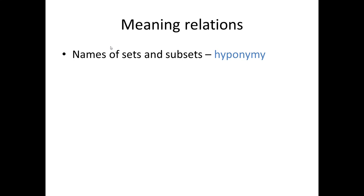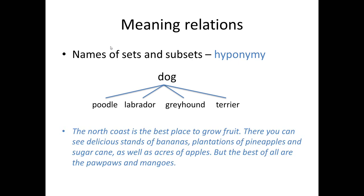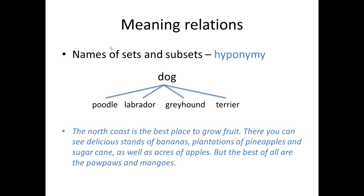Another meaning relation involves names of sets and subsets. The technical name for this is hyponymy. For example, 'poodle' names a subset of 'dog' — a poodle is a kind of dog. There's also a meaning relationship between 'poodle' and other words that name other kinds of dogs, for example labrador, greyhound or terrier. Texts can be tied together by using words which have these kinds of meaning relation, like: 'The north coast is the best place to grow fruit. There you can see delicious stands of bananas, plantations of pineapples and sugar cane, as well as acres of apples. But the best of all are the pawpaws and mangoes.' Here we have the name of a set, 'fruit', and words for different kinds of fruit, and these terms tie the different sentences together.